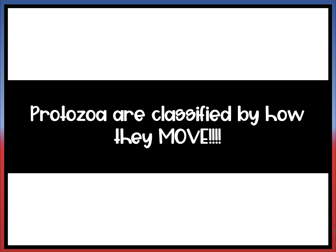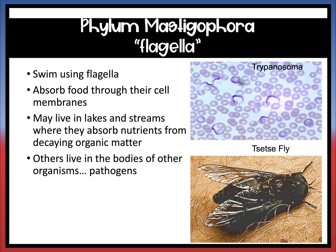Protozoa are classified by how they move — what is their mechanism for movement? The first phylum we will look at is the Mastigophora phylum, which involves movement using a flagella. They swim using flagella and absorb food through their cell membranes. They can be found in lakes and streams where they absorb nutrients from decaying matter, and they tend to live in the bodies of other organisms as pathogens.